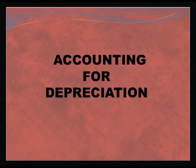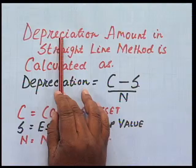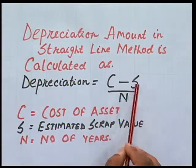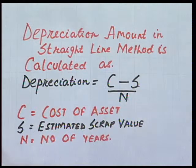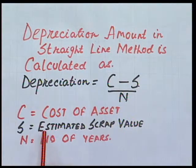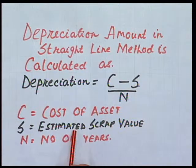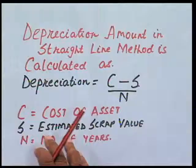There is a formula for calculating the amount of depreciation under the straight line method. The formula is: (C - S) / N, where C indicates the cost of the asset, S indicates the estimated scrap value — the value estimated to be realized after its useful life — and N indicates the number of years. So the straight line method has a constant charge each year.